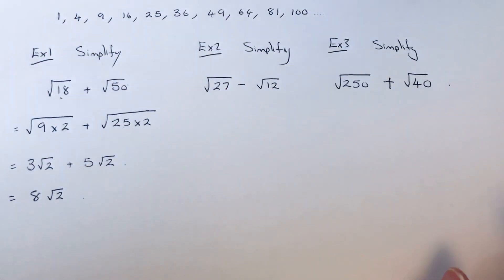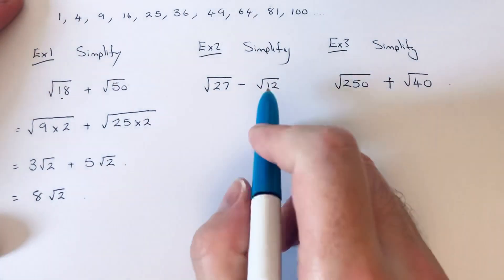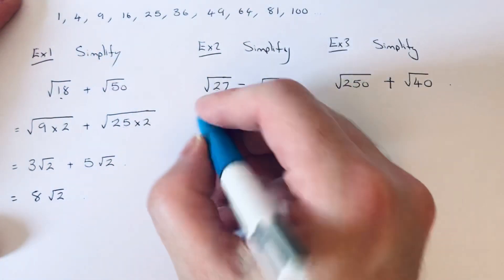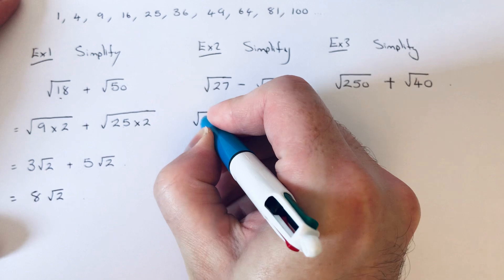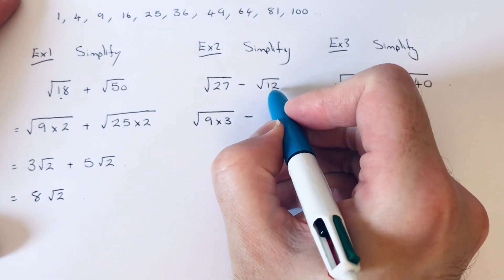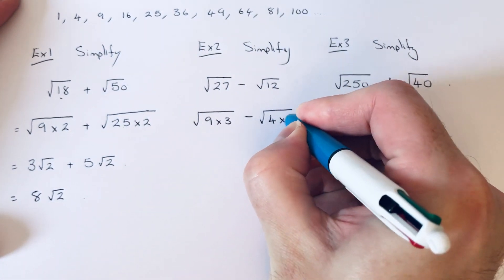So let's have a look at the second example. This time we've got to simplify root 27 take away root 12. So the biggest square number that goes into 27 is 9. So we can write 27 as 9 times 3. And the biggest square number which goes into 12 is 4. So we can write 12 as 4 times 3.